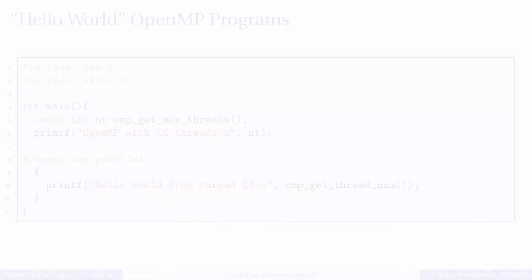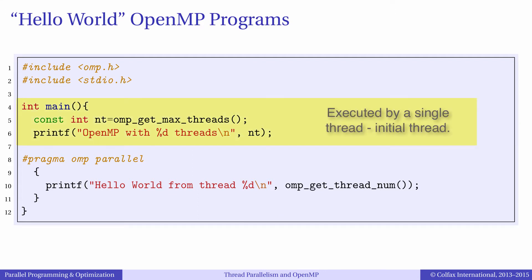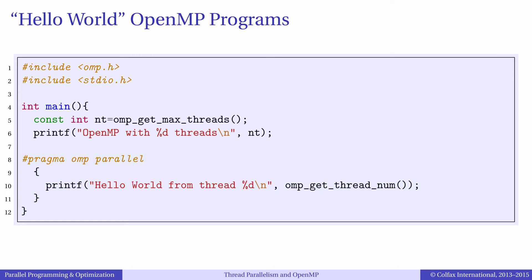Let us begin with a Hello World example. This application queries the number of threads available to it, prints it out on the screen, and then starts a team of threads and makes every thread print its number. The execution model with OpenMP is that the program begins with a single thread called the initial thread. At some point in the code, the statement pragma omp parallel spawns multiple threads, and every thread executes the code in the scope of the pragma. After the end of the scope, execution returns to the initial thread.